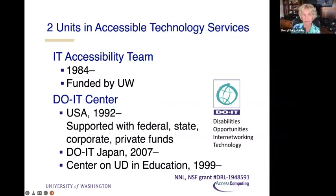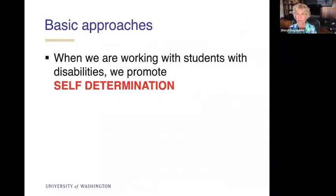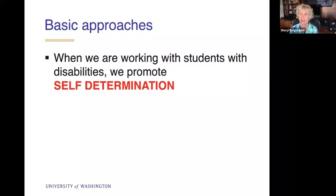The DOIT Center was funded by a lot of different grants, and we even have a DOIT Center in Japan. We also have the Center on Universal Design and Education that we founded in 1999 with money from the US Department of Education. Most of our grants come from the National Science Foundation, and their interest is broadening participation in STEM to include more people with disabilities in those fields.